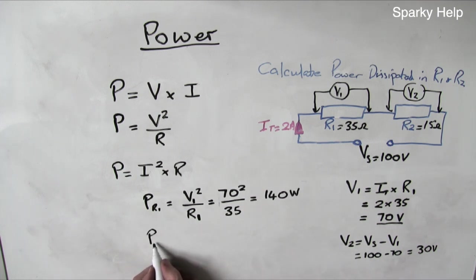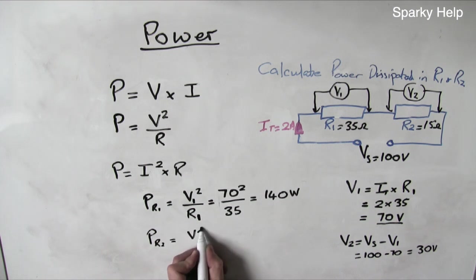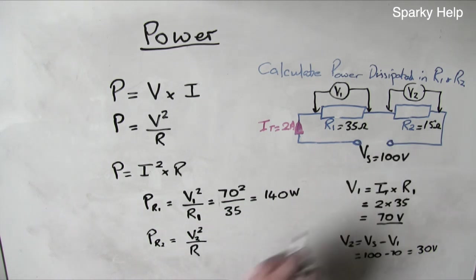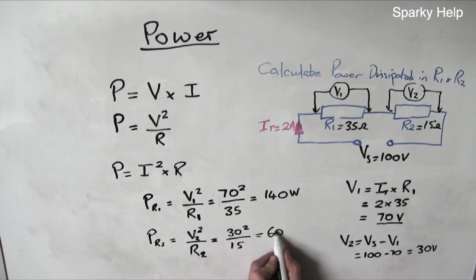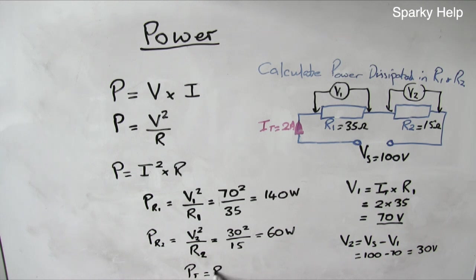Do the same again. Power in R2, we'll use the same formula. V² over R. Well, again, it has to be the voltage, so that becomes V2² divided by R2. So we put those figures in. We already calculated it from Kirchhoff's law over here. So that becomes 30² divided by 15, which gives you 60 watts. And again, earlier on, we calculated power total can be P1 plus the power in R2. So 140 plus 60 gives the total power 200 watts.